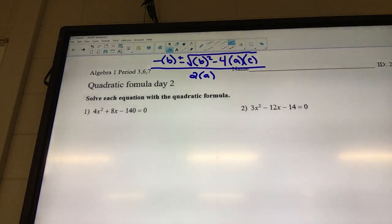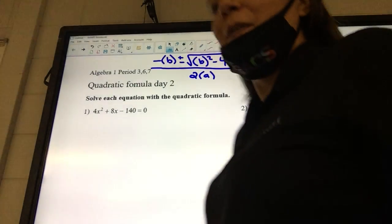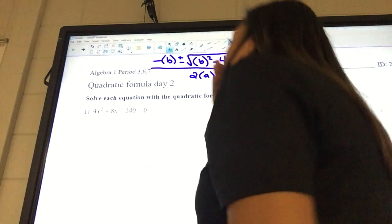All right, so if we look at number 1, what is our A? 4. B? 8. C? Negative 140.